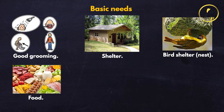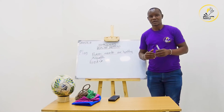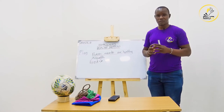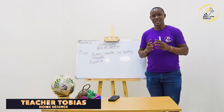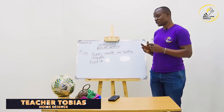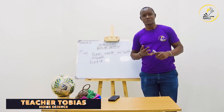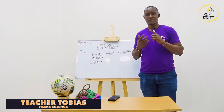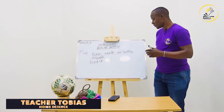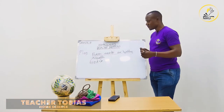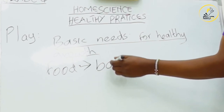Food is our third basic need. For us to have healthy and proper growth, we should ensure that we take food. It shouldn't only be food — it should always be a well-balanced diet. We talk of fruits, proteins, carbohydrates, and mineral salts. When we take all of these together, we are talking of a balanced diet.